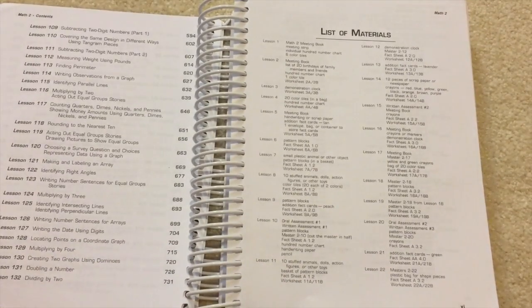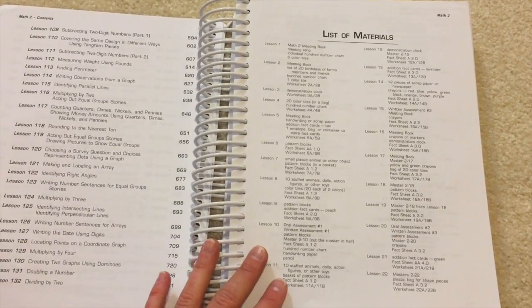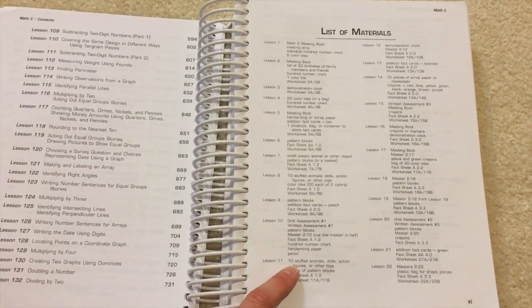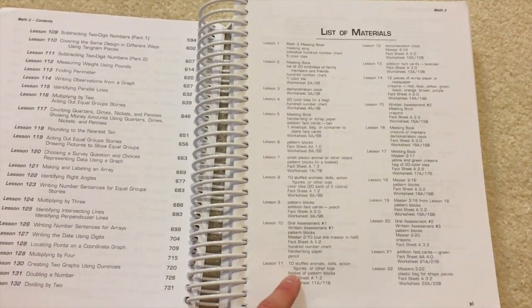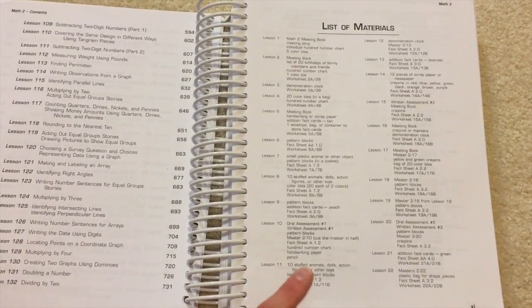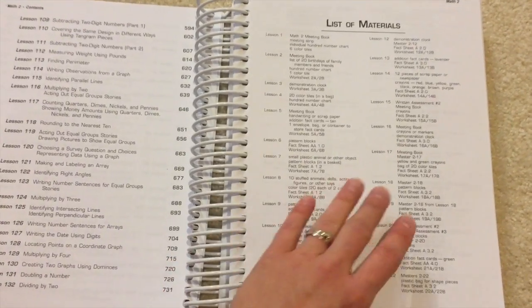And here's the other thing. They have their at home manipulatives kit that you can purchase. But then they also have lots of activities within the lessons where you say need 10 stuffed animals or dolls or action figures, or just some toys. And you're not going to find those in that home study manipulatives kit. So to me, it just seems superfluous.